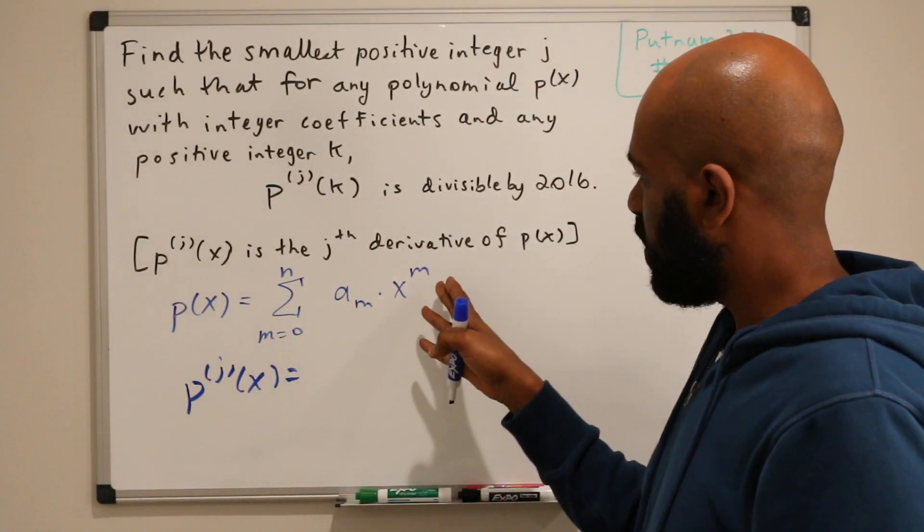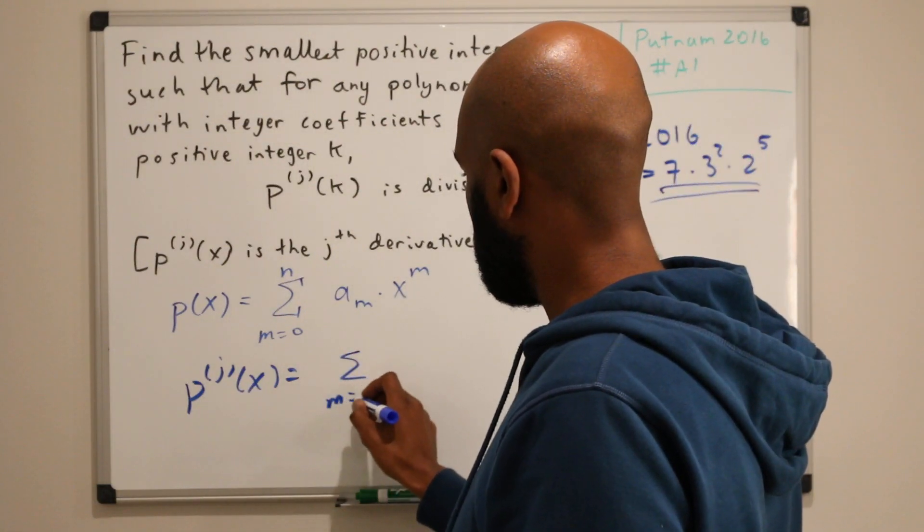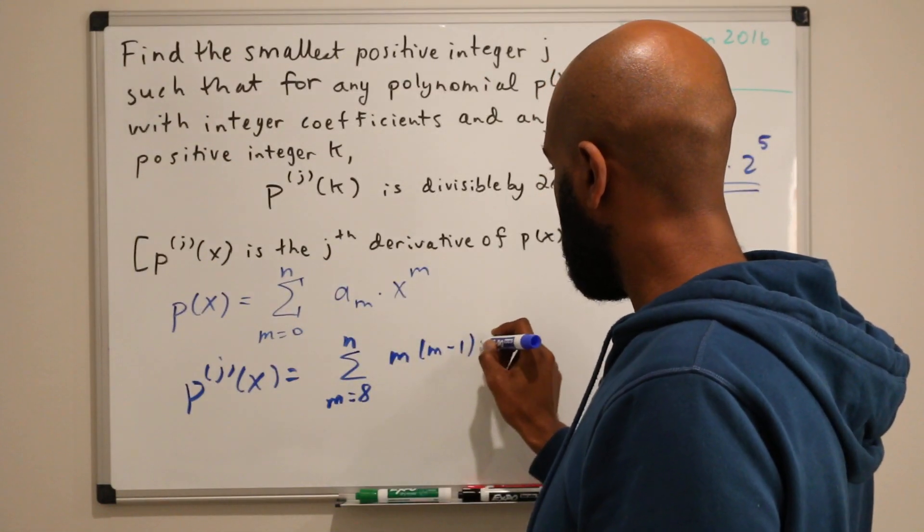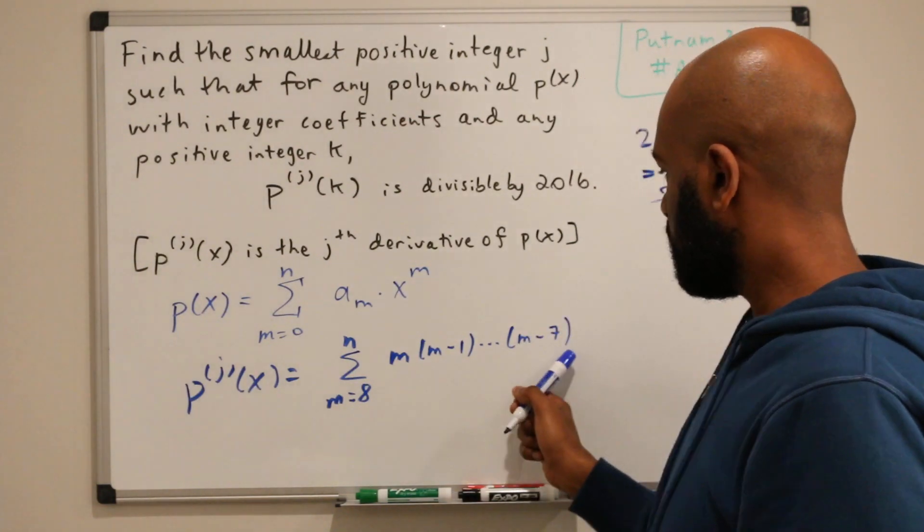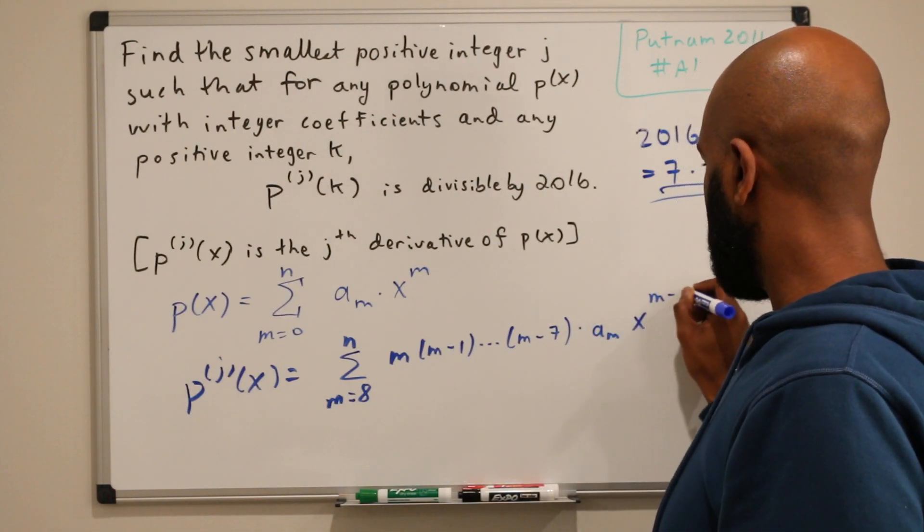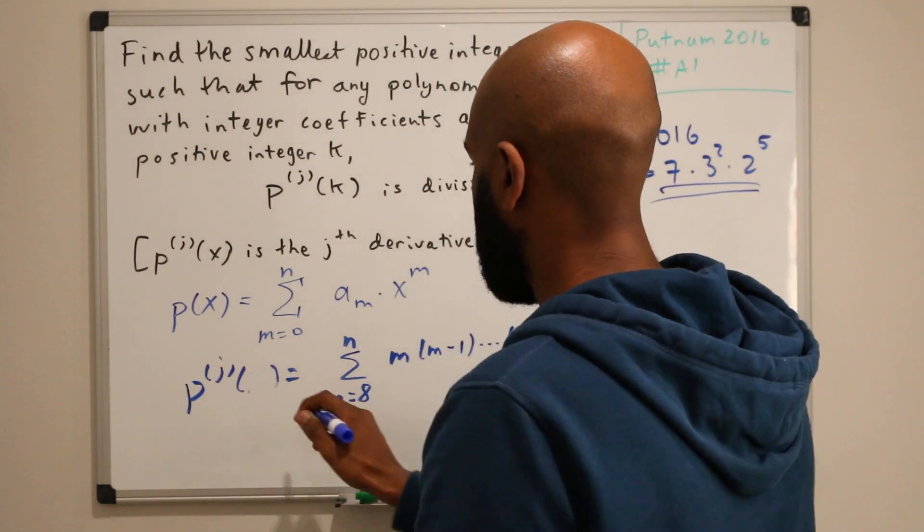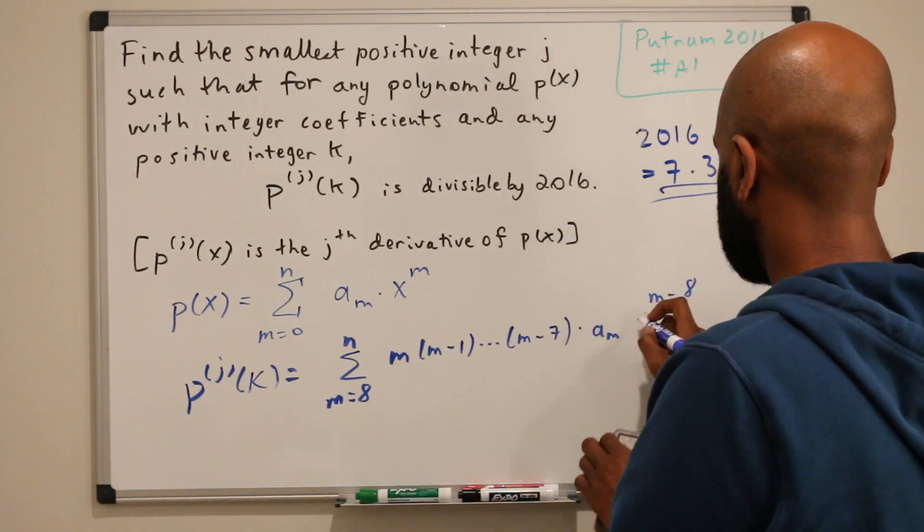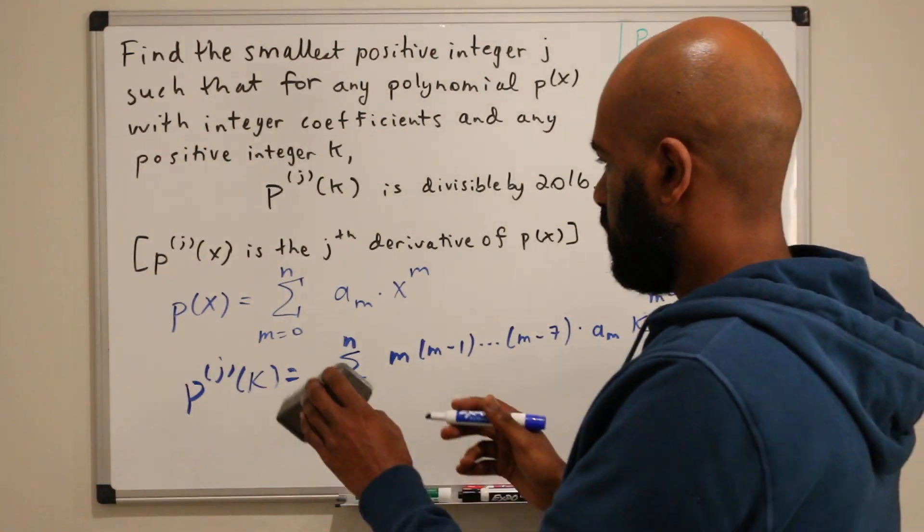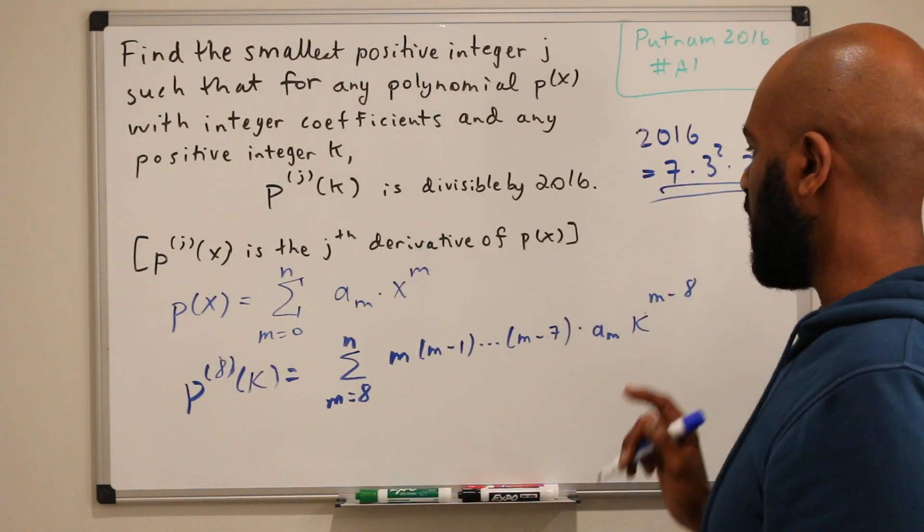The 8th derivative will get rid of the powers up to x to the 7. We'll be left with the sum m equals 8 to n of something like m times m minus 1 up to m minus 7. So we're differentiating 8 times times a sub m times x to the m minus 8. And we're evaluating this at some random positive integer k. So our expression will look like something like this. And we're curious whether or not this is enough, meaning that this expression is divisible by 2016.